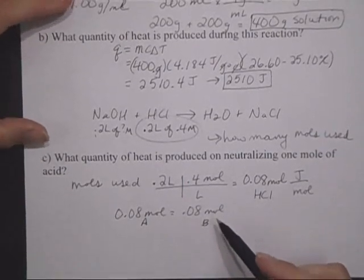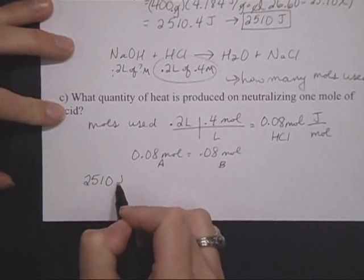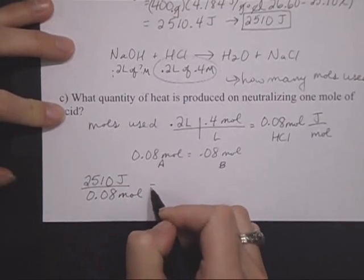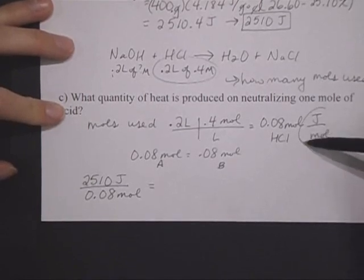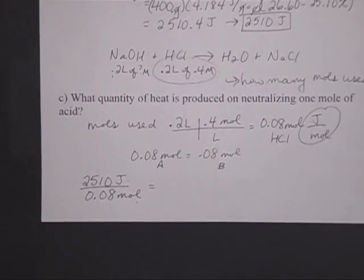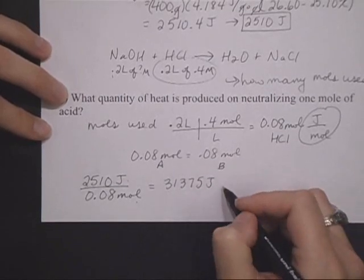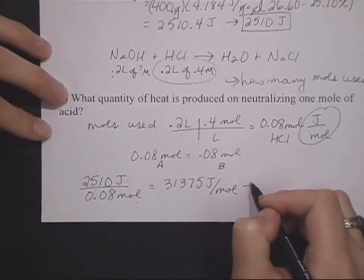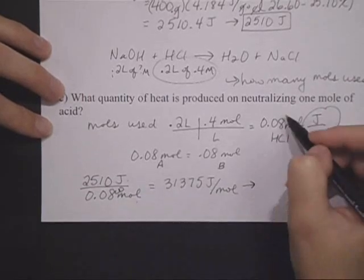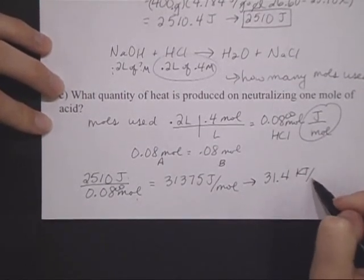That means in part B I calculated, this is the last part I promise, I generated 2,510 joules by neutralizing 0.08 moles of acid. So again, I'm using my units here to help me figure out what I want. I generated that much heat from that many moles. So as I divide, 2,510 divided by 0.08, I get 31,375 joules per mole. Or you can change that if you want to, we want sig figs so we can really only have 3, we should have had zeros after our 8's here. But 3 sig figs in the end, so 31.4 kilojoules per mole.